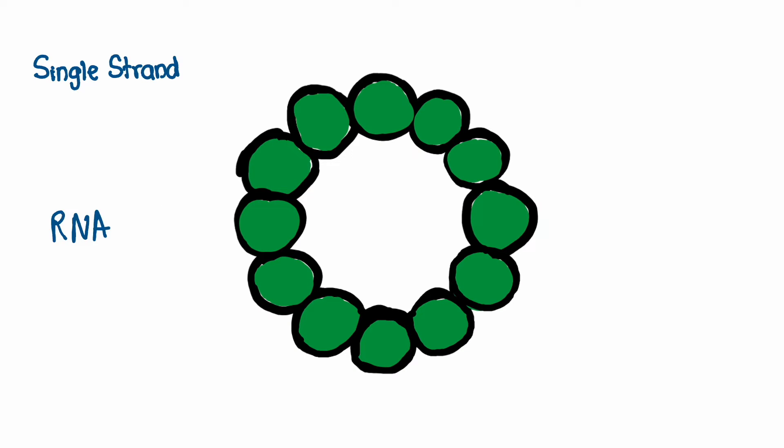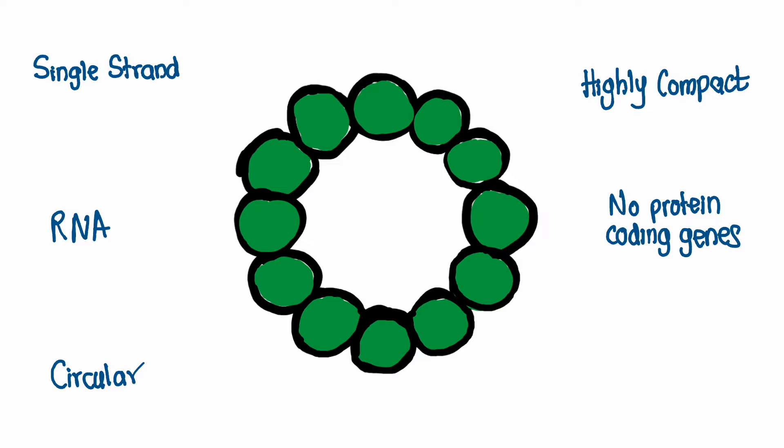Viroids are composed of single-stranded RNA molecules that are circular and highly compact. Unlike viruses, viroids do not possess any protein coding genes.